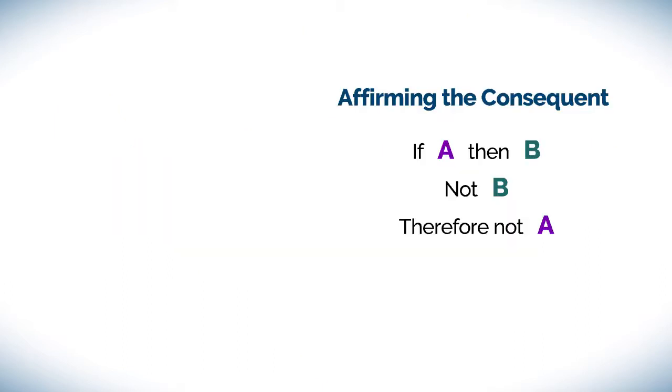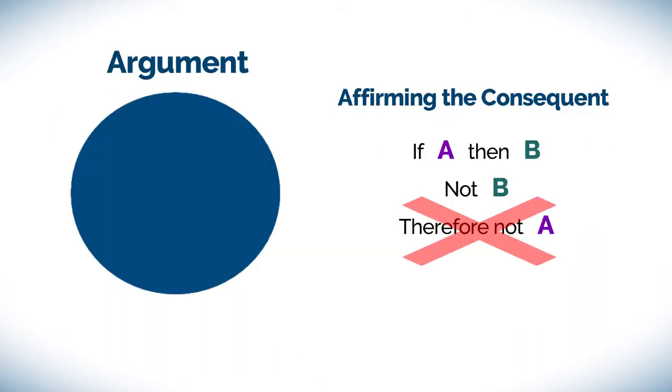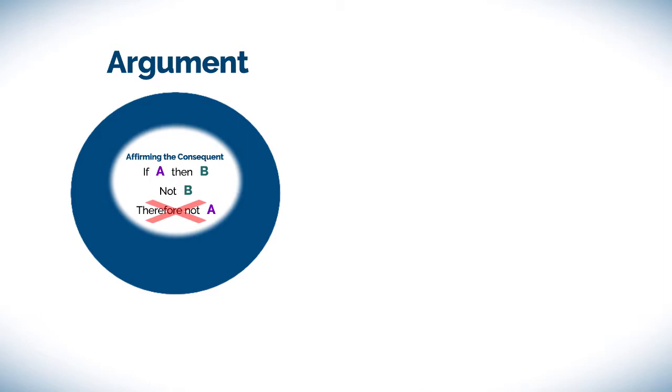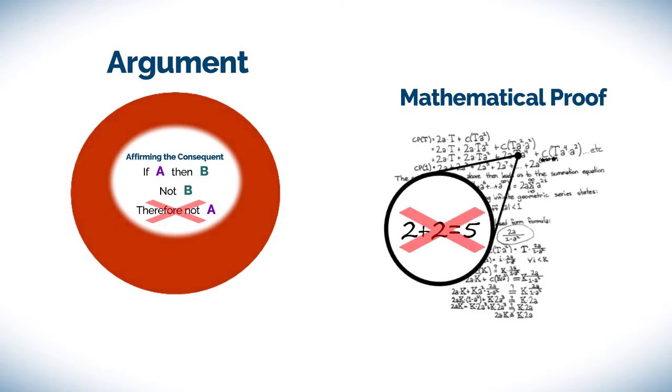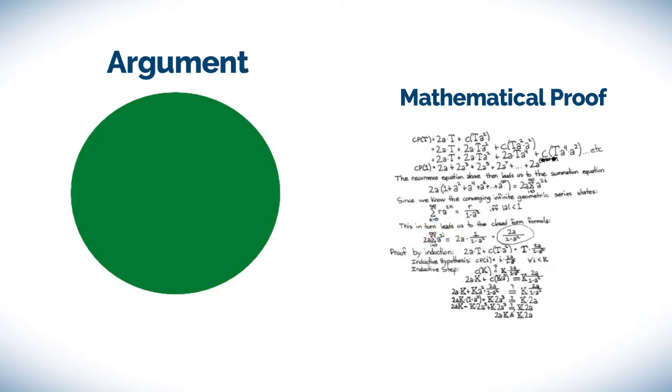Because they are established errors in logic, an argument that is shown to contain a logical fallacy is its immediate defeat. It's sort of like finding out a mathematical proof relies on a basic arithmetic error. There is no recovery unless the argument can be shown to not rely on a fallacy.